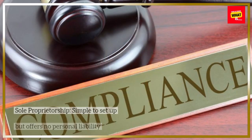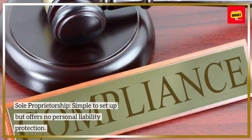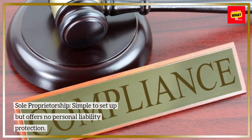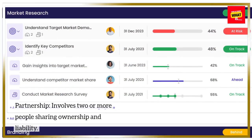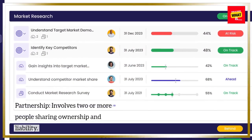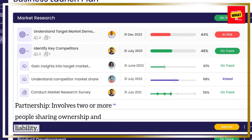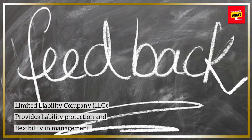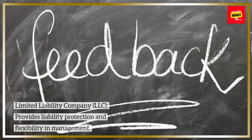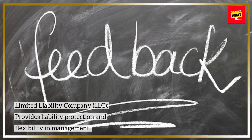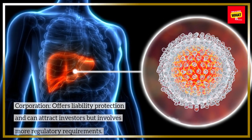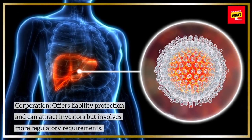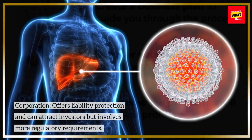Step 3: Choose a Business Structure. Sole Proprietorship — simple to set up but offers no personal liability protection. Partnership — involves two or more people sharing ownership and liability. Limited Liability Company (LLC) — provides liability protection and flexibility in management. Corporation — offers liability protection and can attract investors but involves more regulatory requirements.